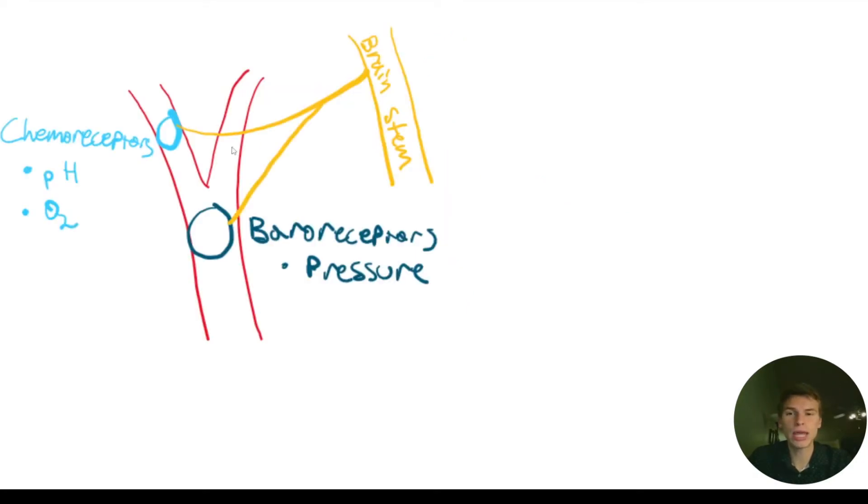And those communicate to the brainstem via these autonomic efferent neurons. Chemoreceptors specifically tell the brainstem about the pH of the blood and the oxygen levels of the blood. And baroreceptors tell the brain about the pressure of the blood.